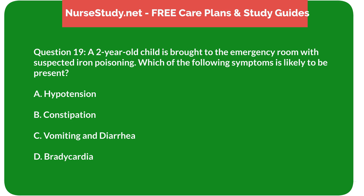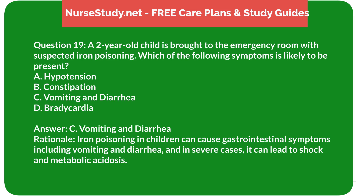Question 19: A 2-year-old child is brought to the emergency room with suspected iron poisoning. Which of the following symptoms is likely to be present? A) hypotension, B) constipation, C) vomiting and diarrhea, D) bradycardia. Answer: C) vomiting and diarrhea. Rationale: Iron poisoning in children can cause gastrointestinal symptoms including vomiting and diarrhea, and in severe cases can lead to shock and metabolic acidosis.